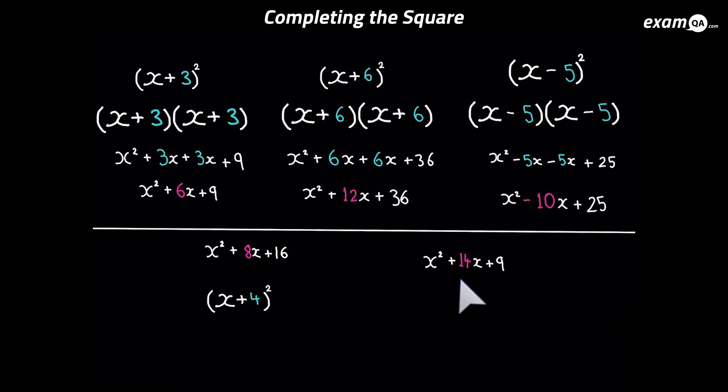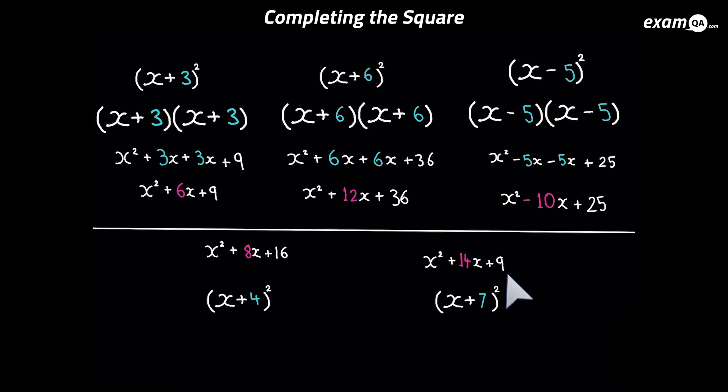For the next one, we're going to put half of 14 in the brackets, which is seven. So it's x plus seven, all squared. Expanding this gives x squared plus 7x plus 7x, making 14x, and also 49. However, we've only got plus nine in the original. So we're getting 49 when we should get nine — that's okay, we just minus 40. With completing the square, you can put anything outside the brackets to adjust. The key thing is you put half of whatever is in front of x inside the squared brackets, and just adjust the number.